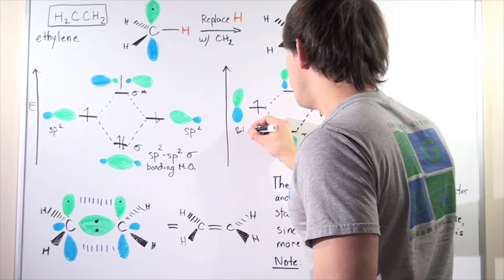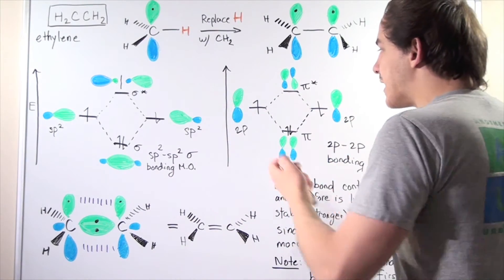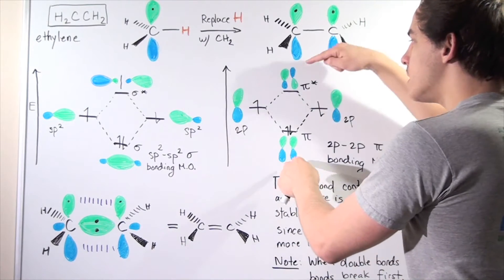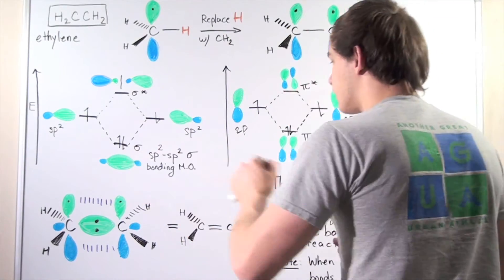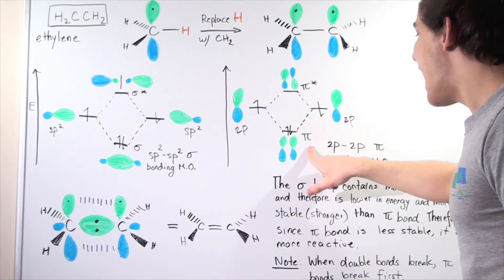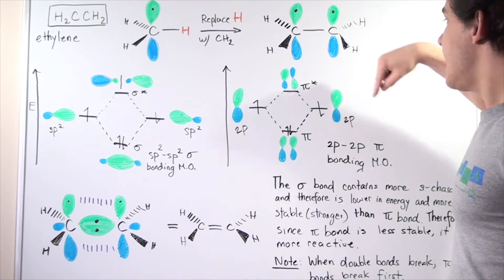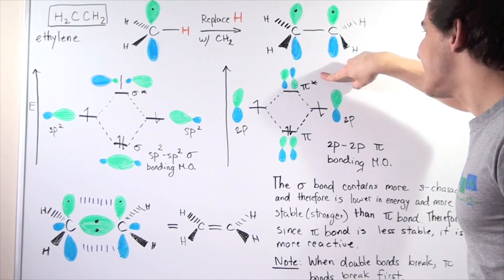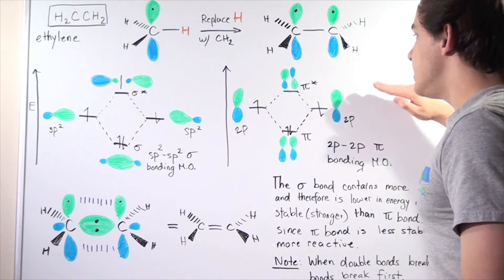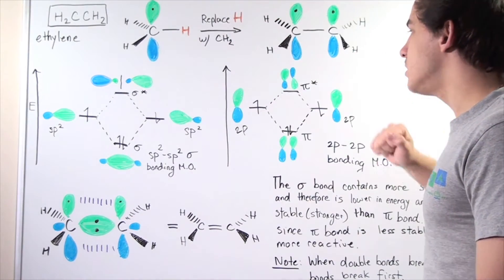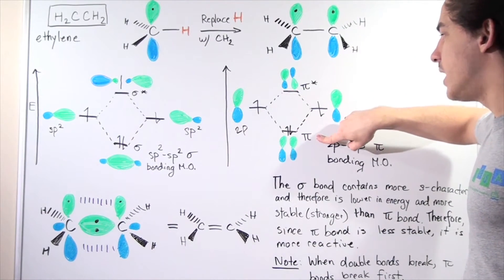Here we have a 2p orbital from one carbon combined with the 2p orbital from the other carbon. Again, combining two atomic orbitals forms two molecular orbitals. However, these are no longer sigma — they're called pi. One is a 2p-2p pi bonding molecular orbital, and the second is a 2p-2p pi anti-bonding molecular orbital. There will be one node between the two orbitals, making the anti-bonding orbital higher in energy, so electrons go into the lower-energy pi bonding orbital.